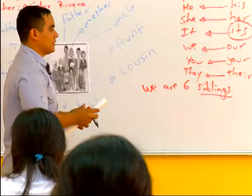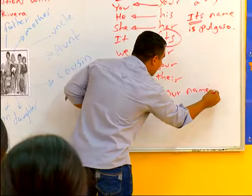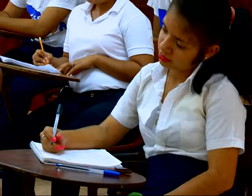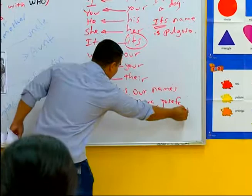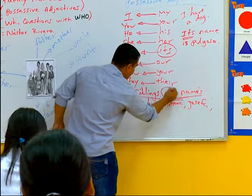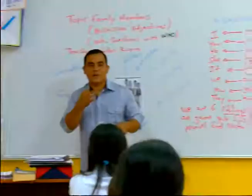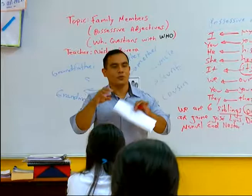Our names are Jaime, José Luis, Dinora, Josefa, Manuel, and Néstor. Our names — nuestros nombres — our names are Jaime, José Luis, Dinora, Josefa, Manuel, and my person, Ernesto. Do you understand? Okay, good.